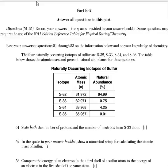So for 51 here, it says to state both the number of protons and the number of neutrons in a sulfur-33 atom. Now, anytime you see anything italicized, you really want to make sure that you're paying attention and answering the questions correctly. These questions aren't any easier or harder than the multiple choice, but a lot of times what happens is if you don't read things thoroughly, you're going to make a mistake.